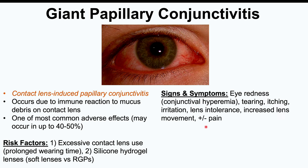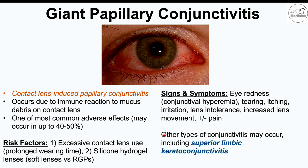Signs and symptoms of giant papillary conjunctivitis include eye redness — conjunctival hyperemia — as well as tearing, itching, and a burning irritation sensation. Patients may also have lens intolerance, where the contact lens feels even more uncomfortable than usual, and there may be increased lens movement on the eye. Pain may or may not be present. There are other types of conjunctivitis in contact lens users, but this is by far the most common.